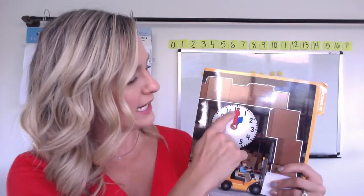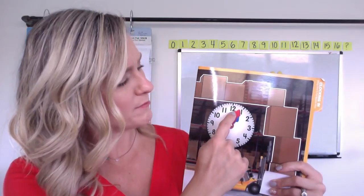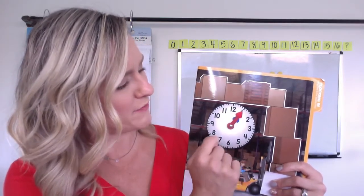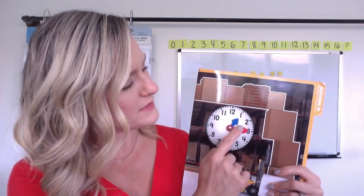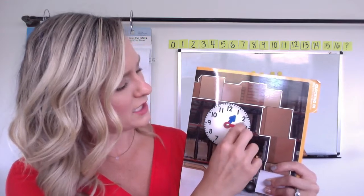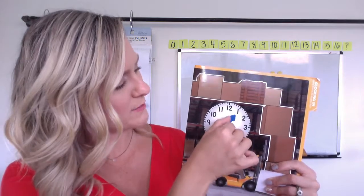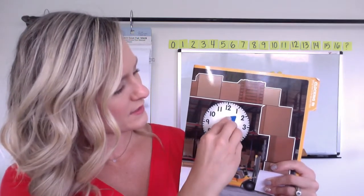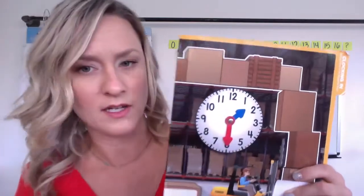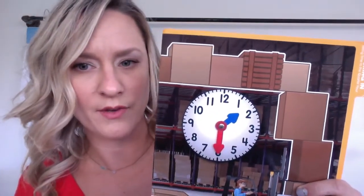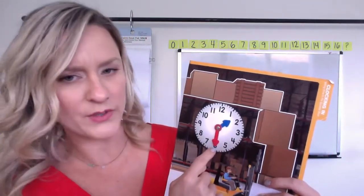So if my minute hand — remember, my red hand is my minute hand — if my minute hand moves, that would be a 5-minute move. 5, 10, 15, and it would keep going and going. That would be finally 30 minutes around the clock. So I was at 1 o'clock and now I am at 1:30. We go 5, 10, 15, 20, 25, 30.